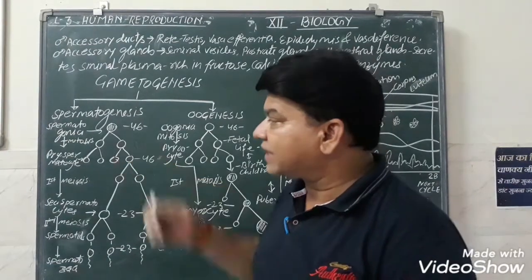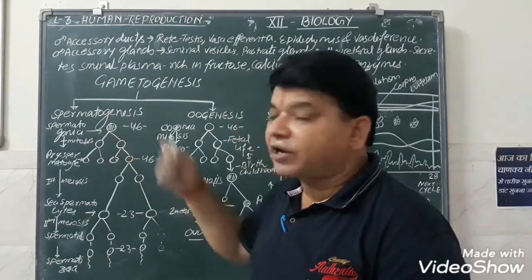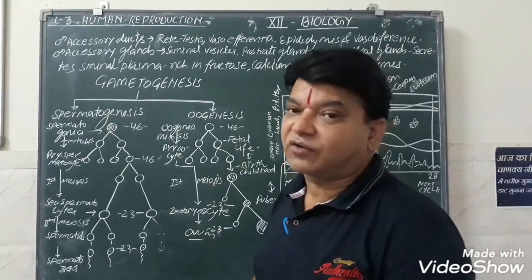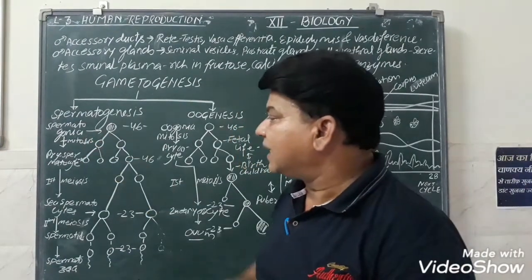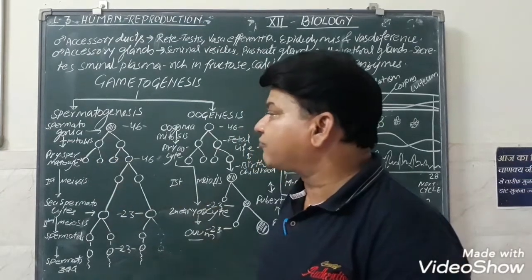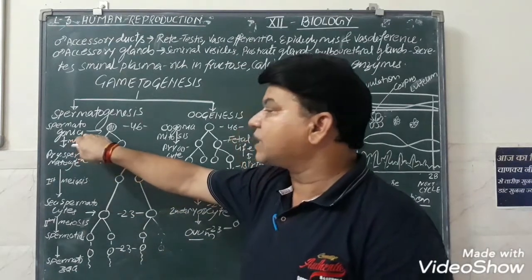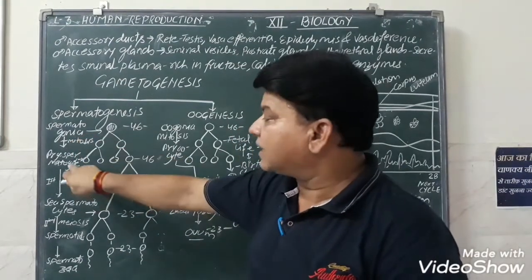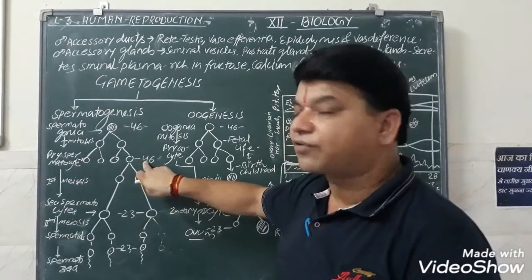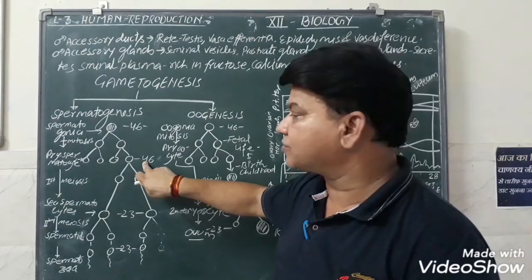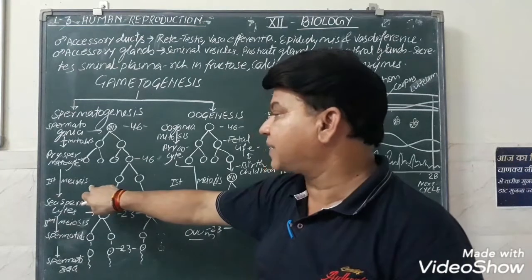The spermatogonia consist of a diploid number of chromosomes, that is 46 chromosomes. Mitotic division takes place here and primary spermatocytes are formed. After mitotic division, the spermatogonia undergo mitosis and form the primary spermatocytes, which also consist of 46 chromosomes — the diploid number. Then the first meiotic division takes place in the primary spermatocytes.